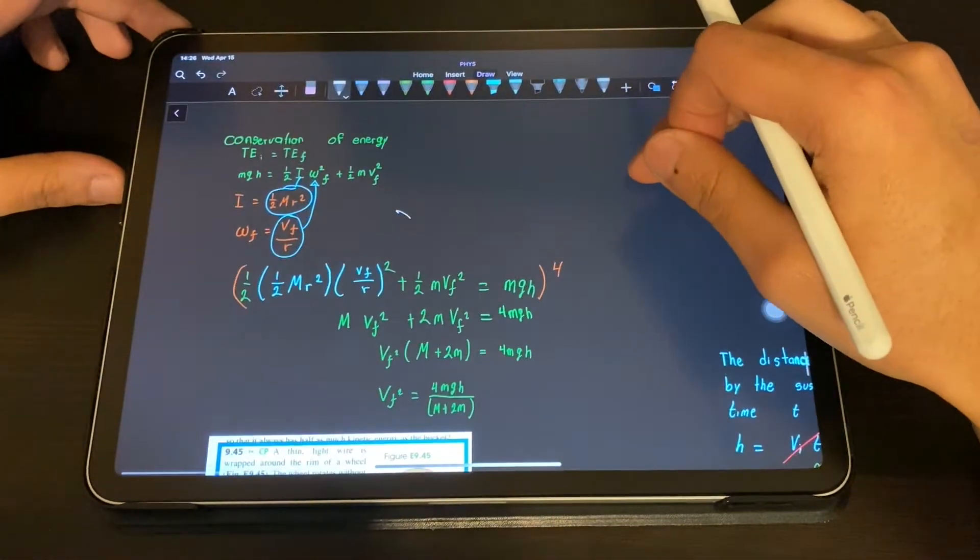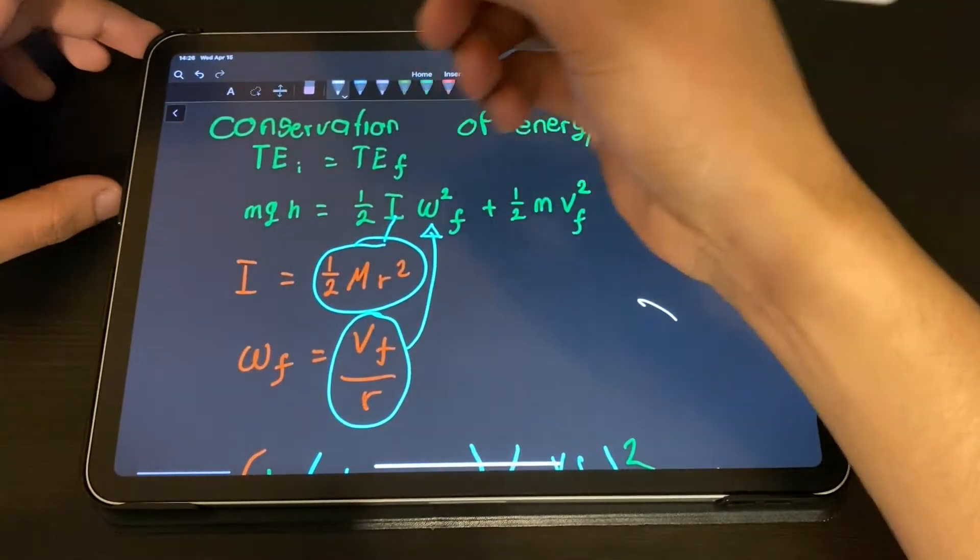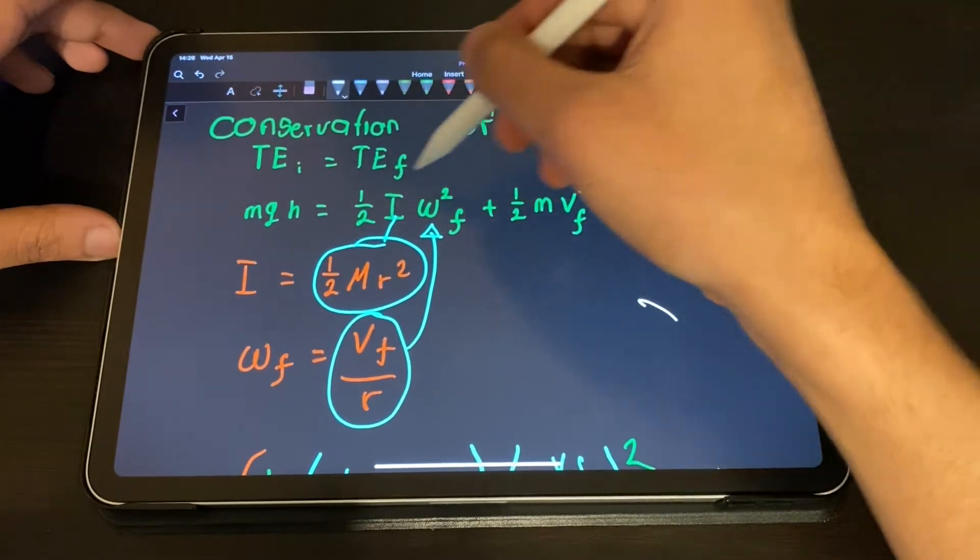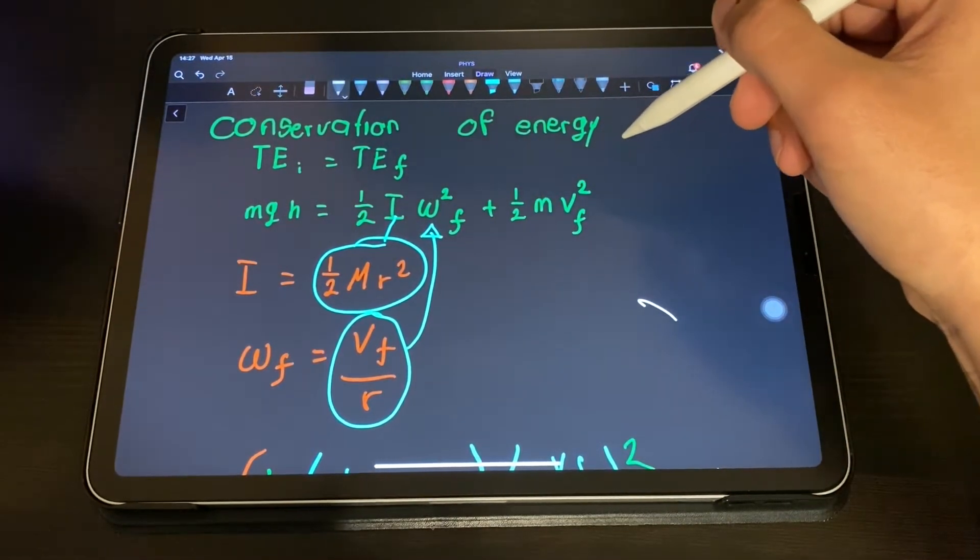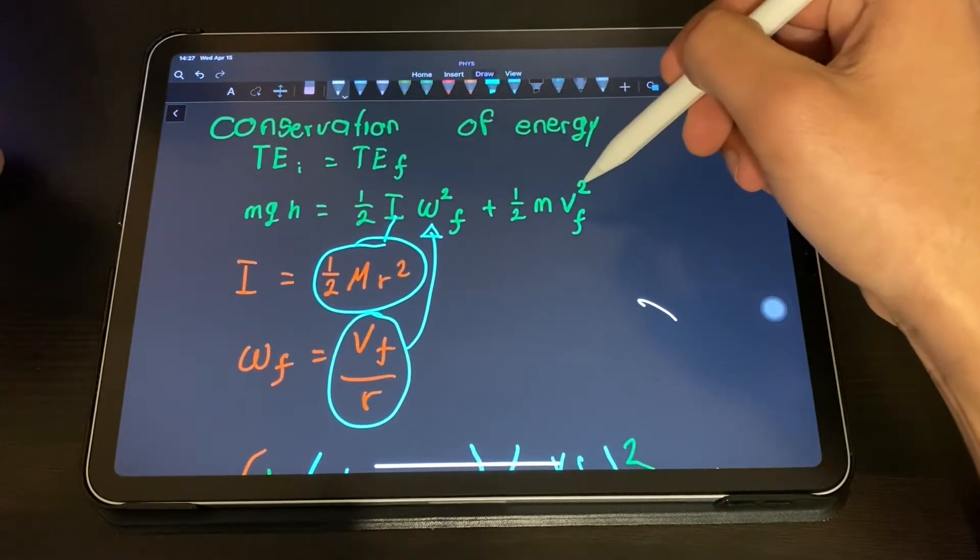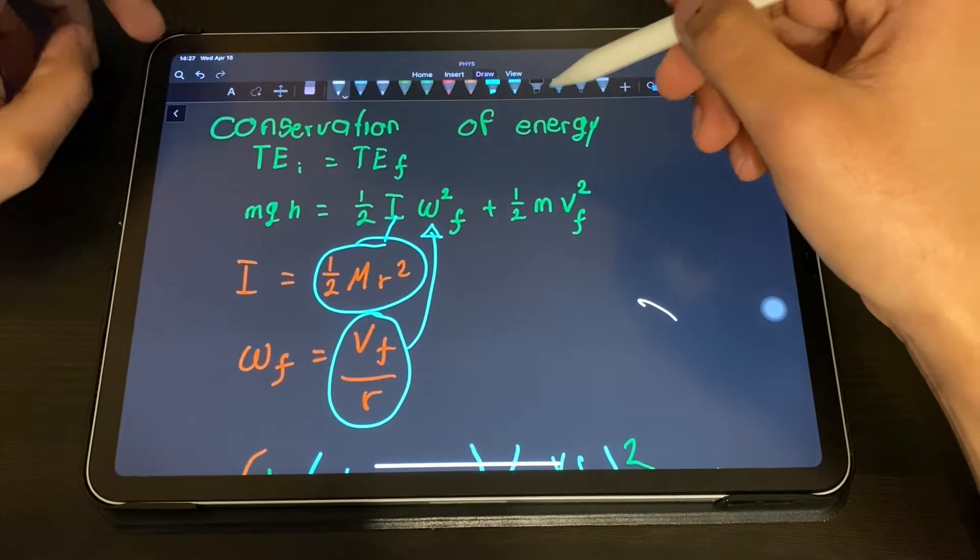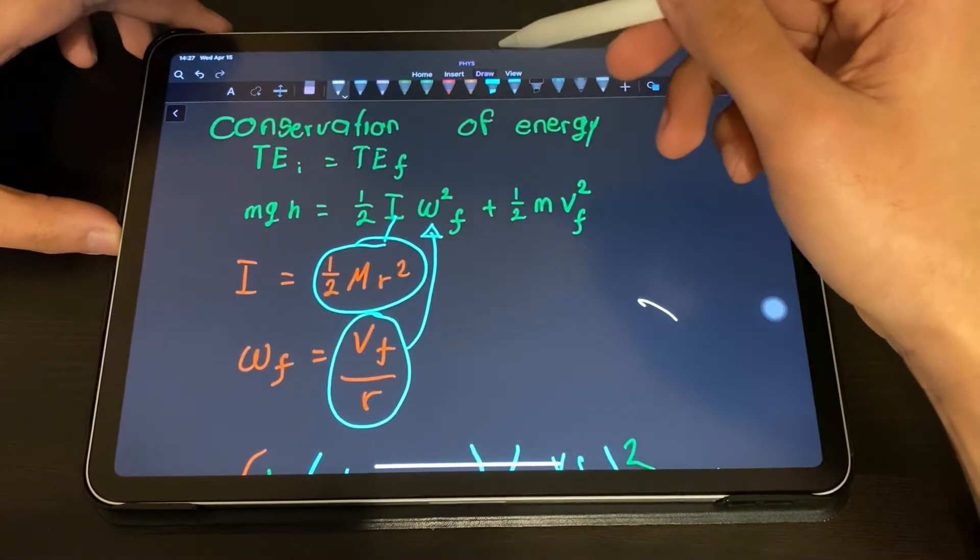At the beginning we have the potential energy and then we have the rotational kinetic energy. This is the formula and there are two things that we don't have but we can find.